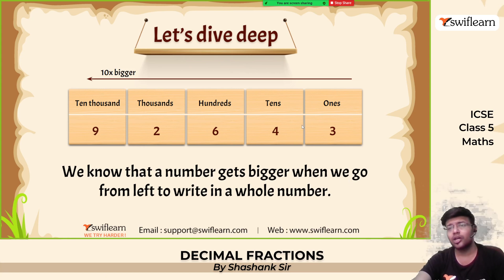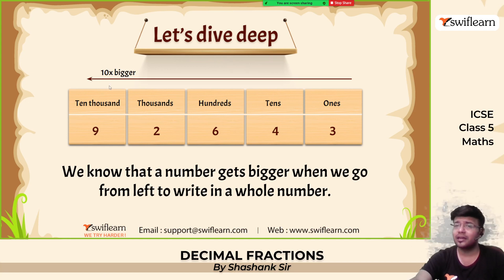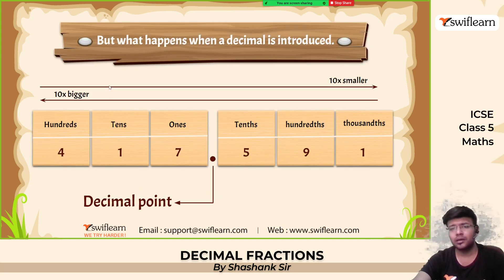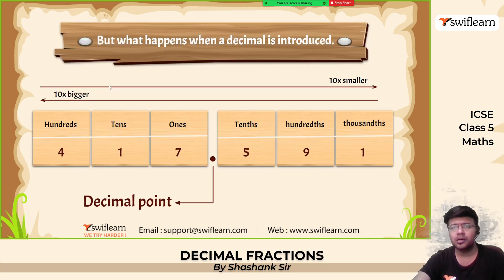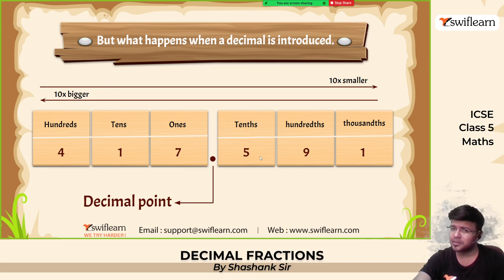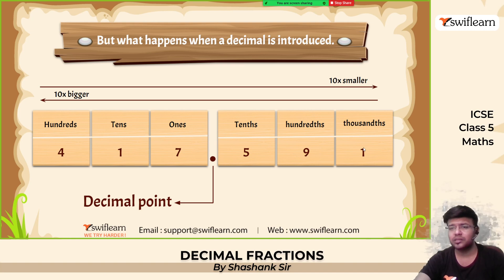We know that a number gets bigger and bigger when we go from right to left — it becomes 10 times bigger. But when we move from left to right, the number reduces by 10. So this is the tens place, hundreds place, and thousands place.